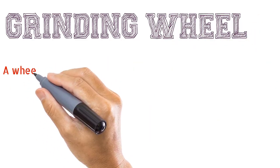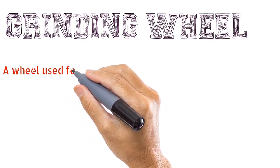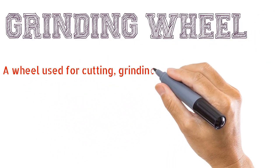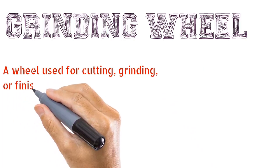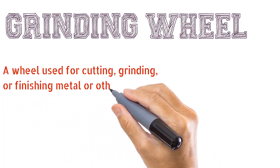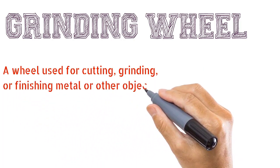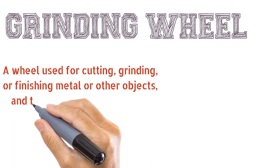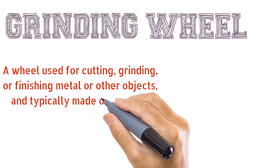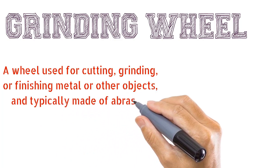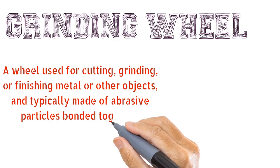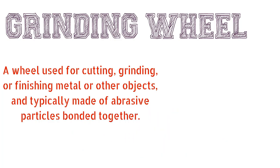A grinding wheel is a wheel used for cutting, grinding, or finishing metal or other objects, and is typically made of abrasive particles bonded together. Different grinding wheels are selected on the basis of their properties, shape, and size.